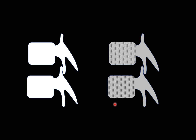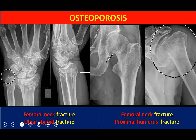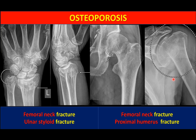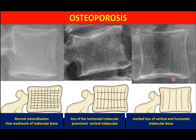The main X-ray changes in osteoporosis are loss of horizontal trabeculations and diffuse osteopenia. Multiple non-traumatic or trivial trauma fractures are also common. The cortex is not clearly seen in diffusely osteopenic bone. Fractures seen peripherally include femoral styloid fracture, radial neck fracture, femoral neck fracture, and proximal humerus fracture — all in diffusely osteopenic bones.